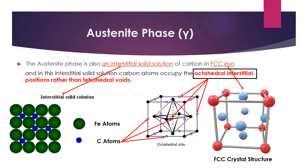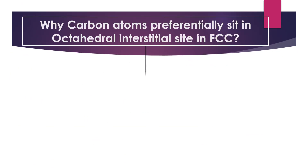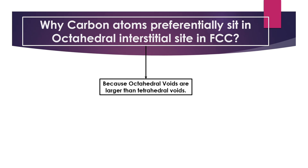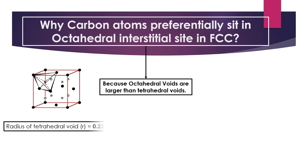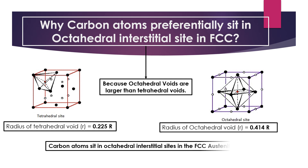Due to this, the solubility limit of dissolving carbon into the FCC unit cell of the austenite phase is greater than the ferrite phase. The reason is the large size of the octahedral void — the radius of the tetrahedral void is only 0.225 times the radius of the atom, compared to 0.414 times the radius of the atom for the octahedral void. Thus, carbon atoms sit in octahedral interstitial sites in the FCC austenite phase.